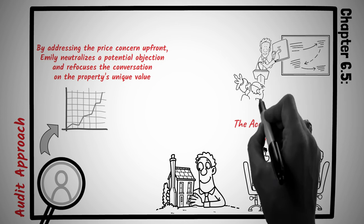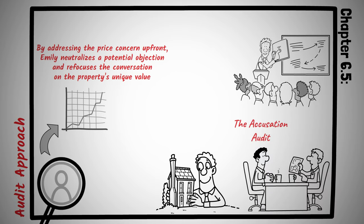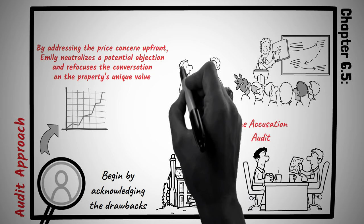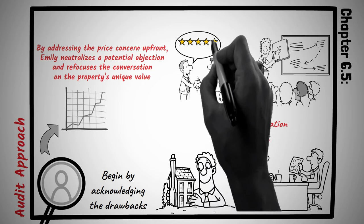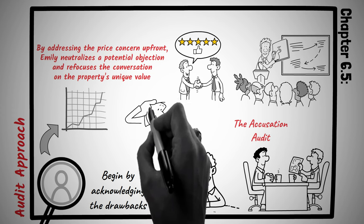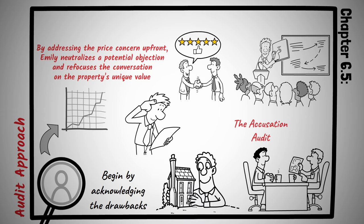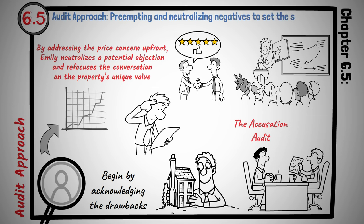Suppose you're presenting a project idea to colleagues, but you're aware of certain shortcomings. Instead of waiting for someone to point them out, take the lead. Begin by acknowledging the drawbacks, followed by strategies to mitigate them, or reasons why the overall benefits outweigh these challenges. This proactive approach not only showcases your thoroughness, but also guides the discussion towards constructive feedback. Anticipating and addressing potential negatives doesn't show weakness. Instead, it displays foresight and control over the narrative. By employing the audit approach, negotiators can steer conversations in their desired direction, cultivating an environment conducive to understanding and cooperation. Principle number 6.5 is audit approach, preempting and neutralizing negatives to set the stage for positive discourse.